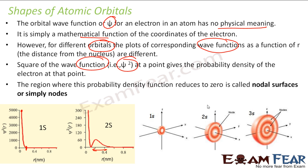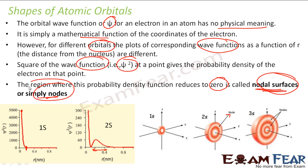We have regions where there is zero probability of finding electrons, and they are called nodal surfaces, or simply nodes. For 1s and 2s, there is a node between them. For 3s, there are two nodes where there is zero probability of finding electrons. Nodal surfaces are the places where we have zero probability of finding electrons.